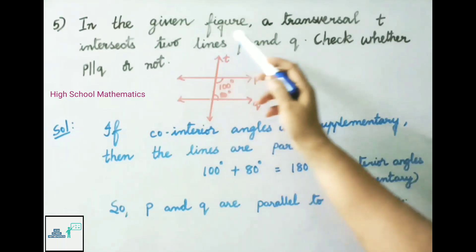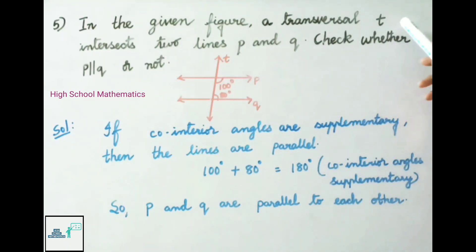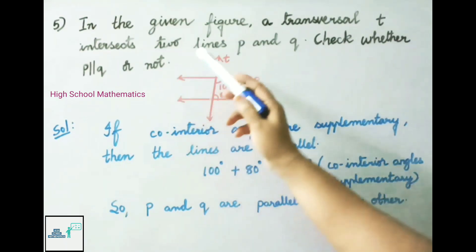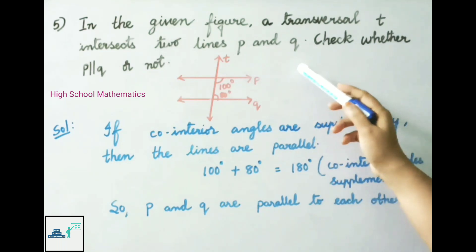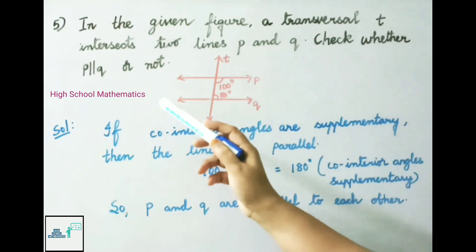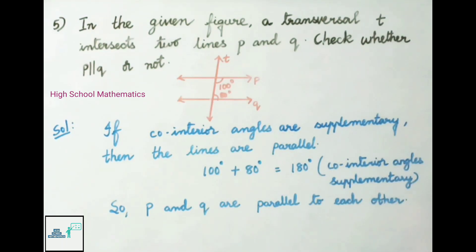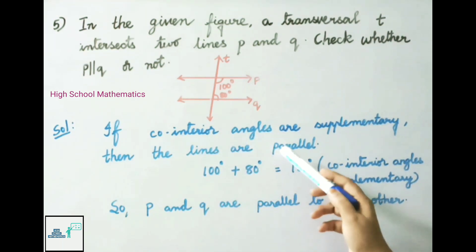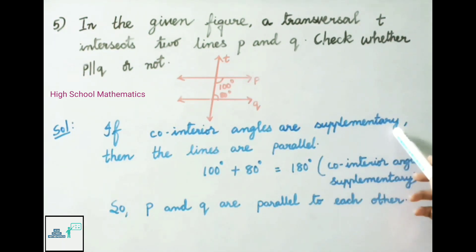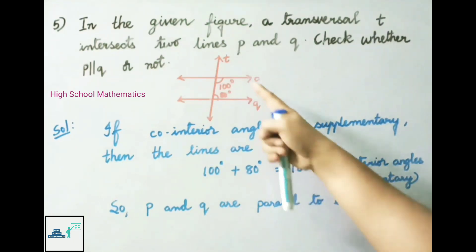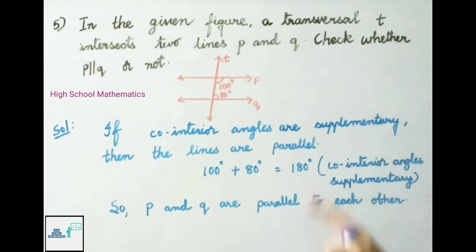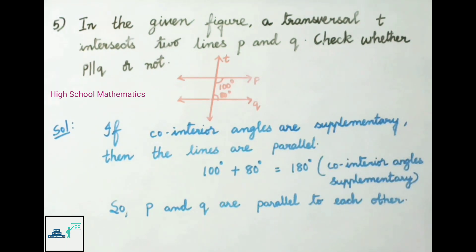Question number 5: In the given figure a transversal T intersects two lines P and Q. Check whether P is parallel to Q or not. If co-interior angles are supplementary then the lines are parallel. 100 degrees plus 80 degrees equals 180 degrees, since co-interior angles are supplementary. So P and Q are parallel to each other.